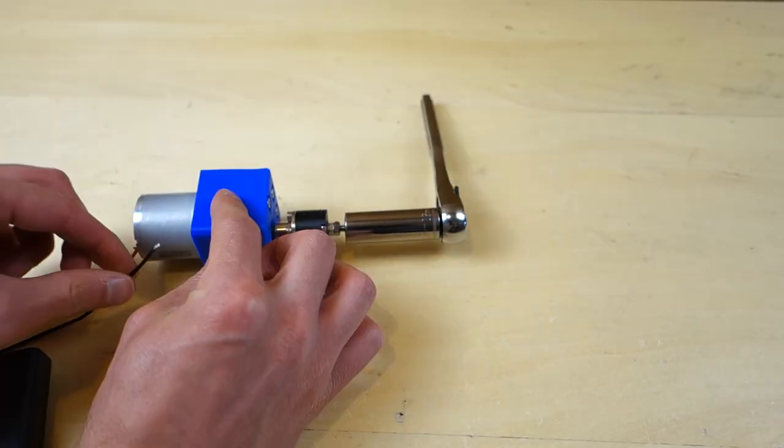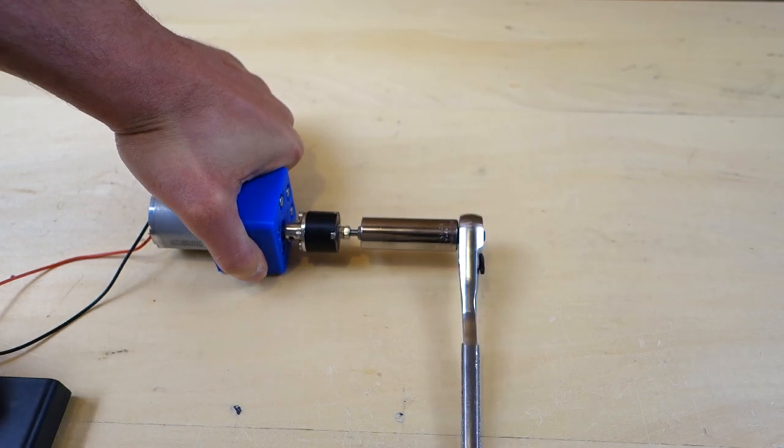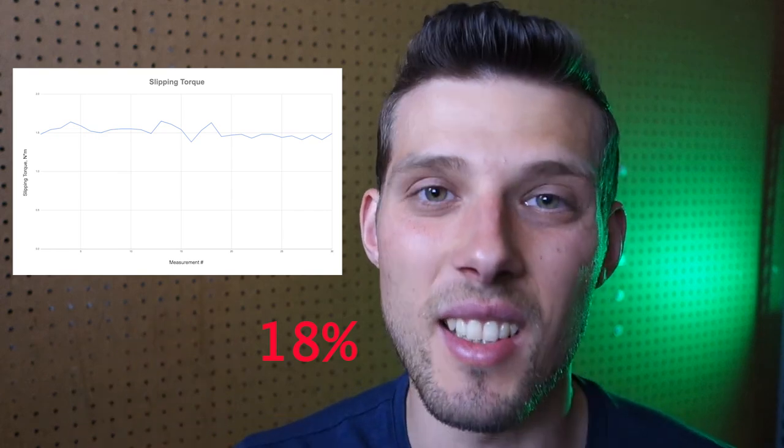Let's double check that the coupling works in the opposite direction. And would you look at that? It works just as great. But there's still one big problem with this torque limiting coupling. The slipping torque varies by 16%. That's a lot.